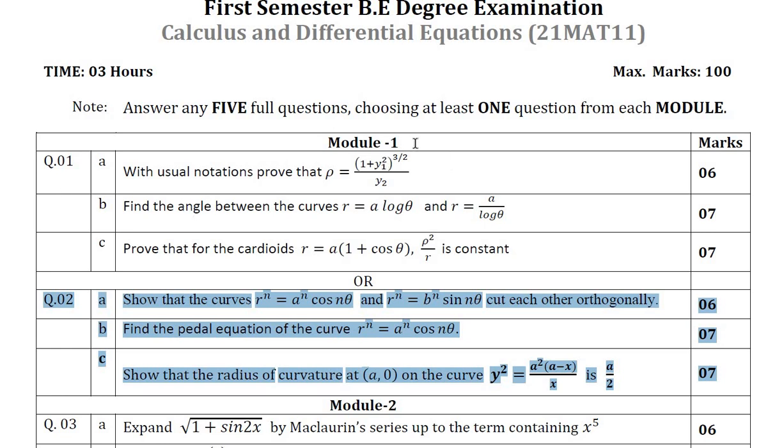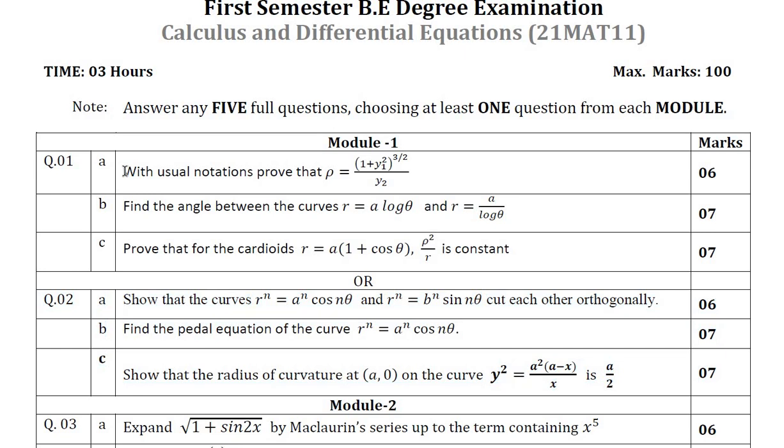In module 1, as you know that we are going to discuss differential calculus 1. Now they have taken question number 1A. When you compare with set 1 paper model paper 1, they were asked to prove that with usual notation tan φ is equal to r into dθ by dr, but in this case they have asked radius of curvature in Cartesian form ρ equal to (1 + y₁²)^(3/2) by y₂. This is just a model paper. There are plenty of ways of asking. Instead of Cartesian form there is a chance of asking the polar form also, or proving with radius of curvature.